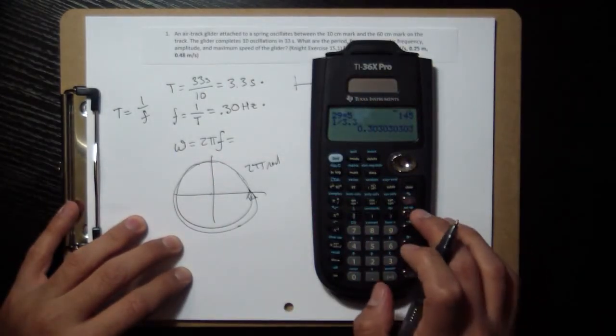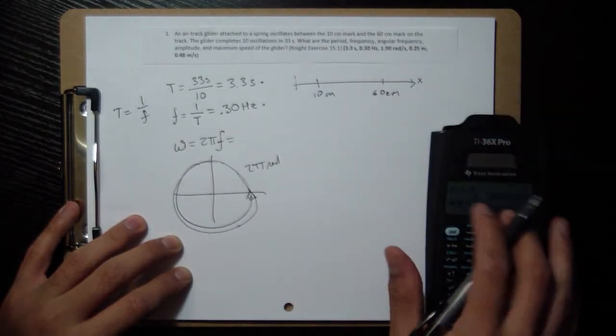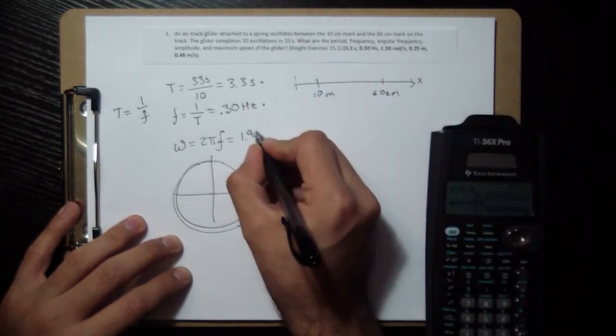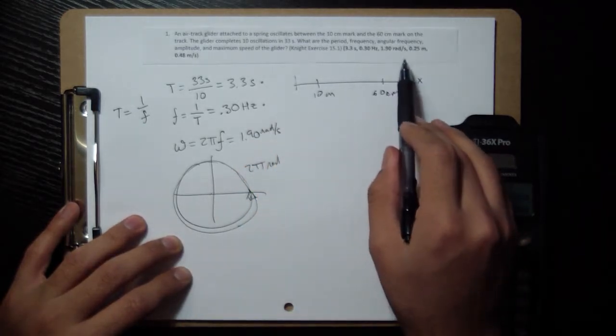So we just multiply by 2 pi. So this times 2 times pi, now you're 1.9.